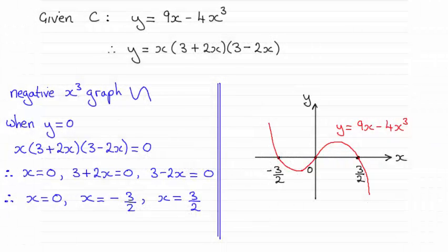Hi there. Now for this next part, we're told that the curve C has this equation, y equals 9x minus 4x cubed, and asked to sketch the graph and show the points where it crosses the x-axis.